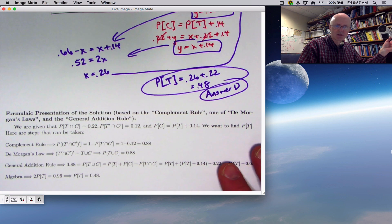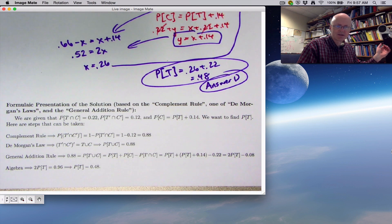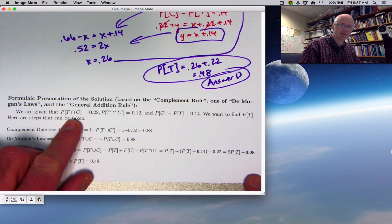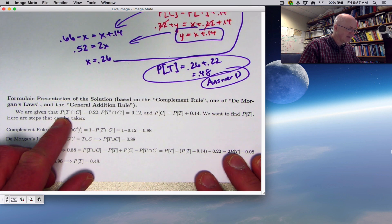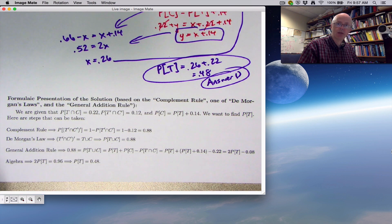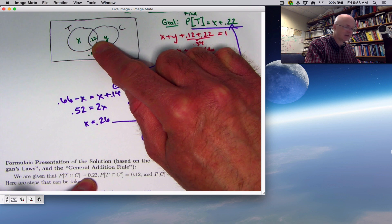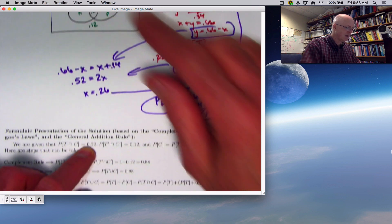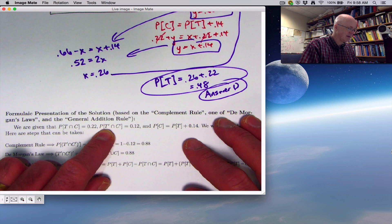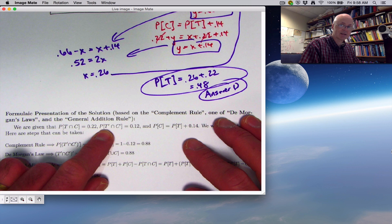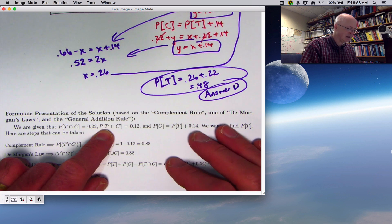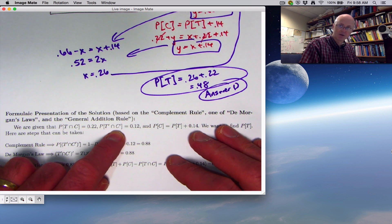Remember, the intersection symbol T intersect C means T and C. We're given that the probability that a randomly chosen patient visits both the physical therapist and the chiropractor is 22%, 0.22. That's the intersection of T and C. We're also given that the probability that they visit neither is 0.12.